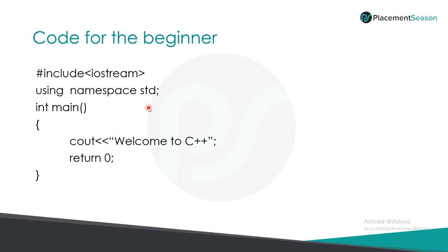here is a code snippet that shows a simple C++ program to display welcome to C++. In this code we have all the parts that we have mentioned earlier. Firstly we have the hash include iostream. Hash include is used to include some files that are required during our execution, and this code includes iostream, the file that is required for input output statements.